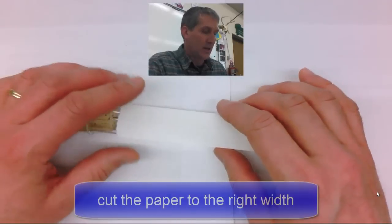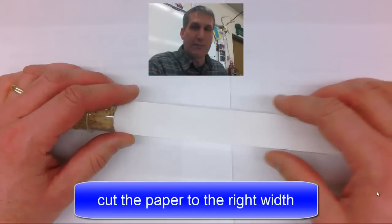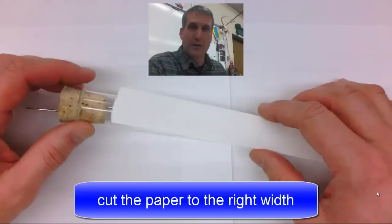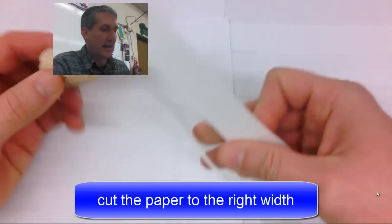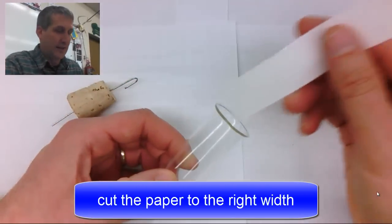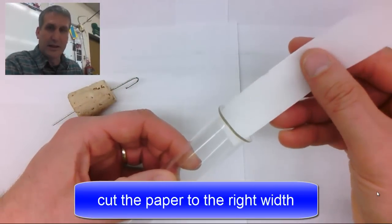The next step is to cut the chromatography paper down a little bit. This particular chromatography paper is a little too wide. It needs to be able to easily slide inside of the test tube.